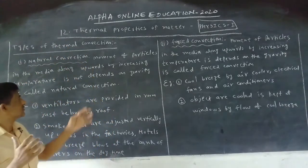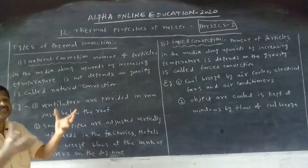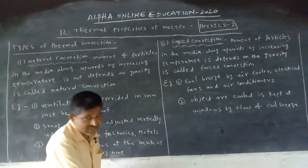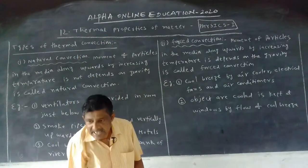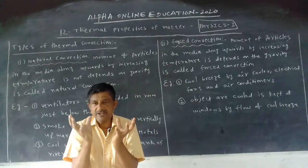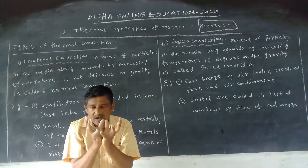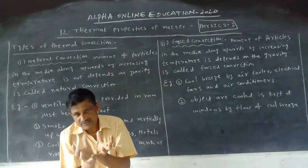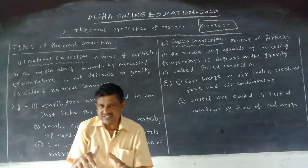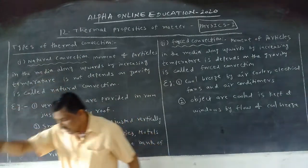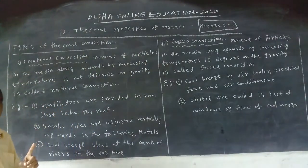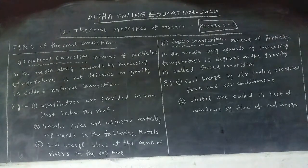When the particles move upwards, it does not depend on gravitational force. When liquid molecules and gas molecules increase in volume after temperature rises, density decreases, they become weightless and move upwards. Gravity does not act on them. This kind of convection is called natural convection — the momentum of particles does not depend on gravity.